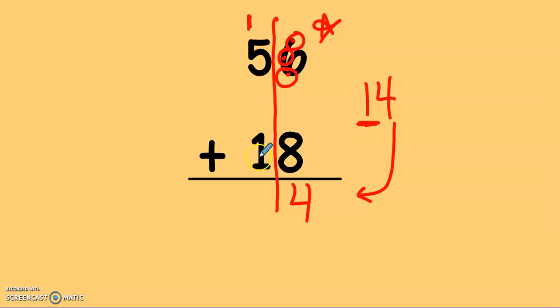Now, I add up my tens. I have 5 plus 1 is 6, plus 1 more is 7. So, in this problem, I did make a new group. I made a new group of 10. I must put it over in the tens column with the other tens.